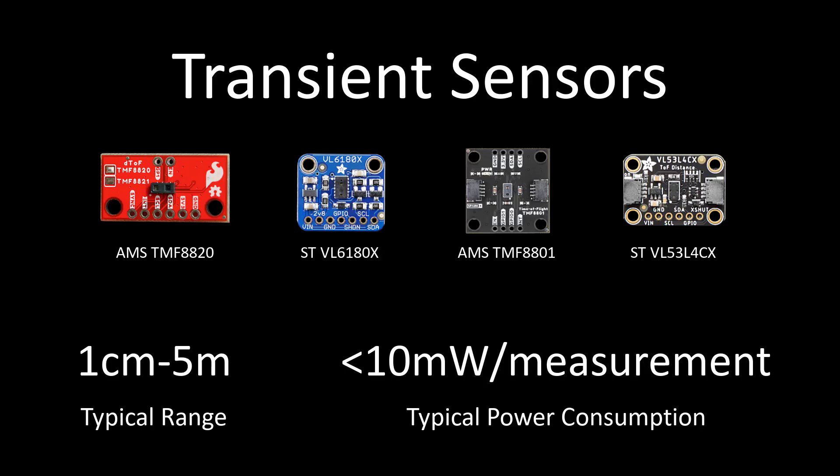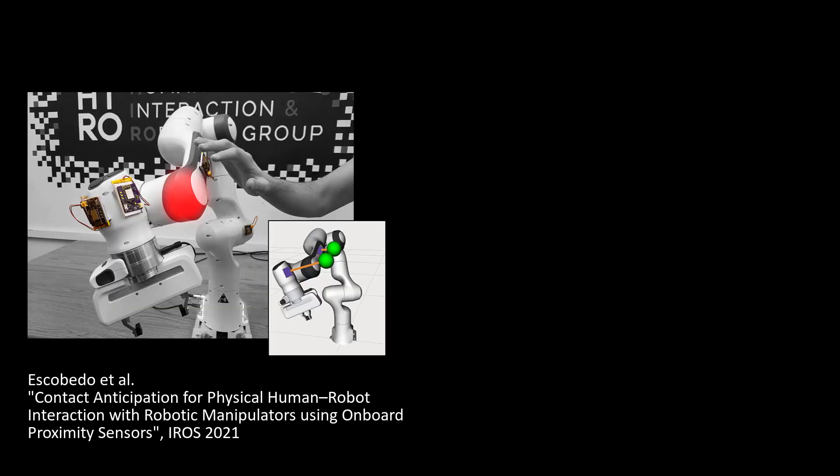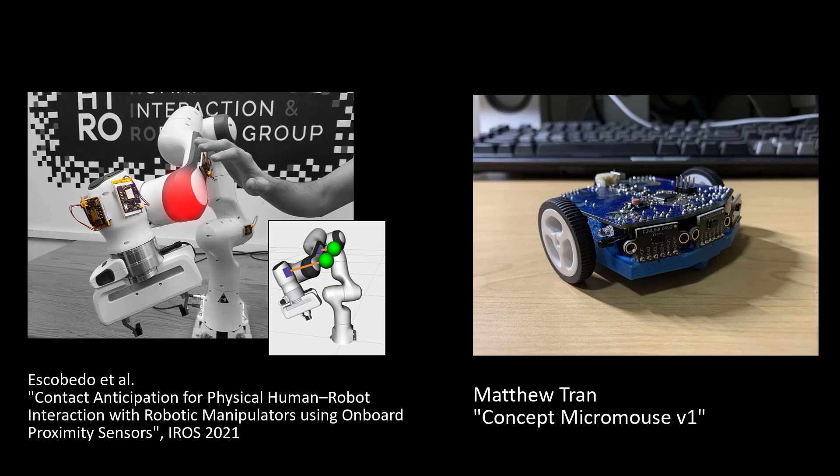Due to their form factor, the sensors are able to be placed where high-resolution 3D sensors cannot, such as on the gripper or links of a robot manipulator, or on very small robots.